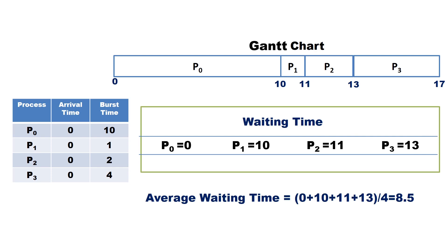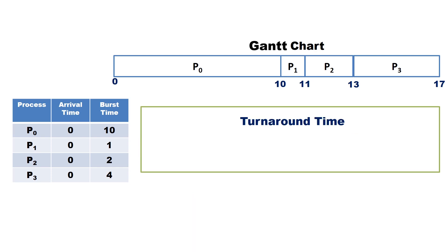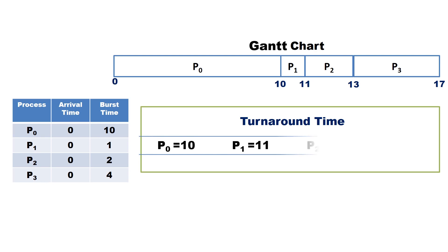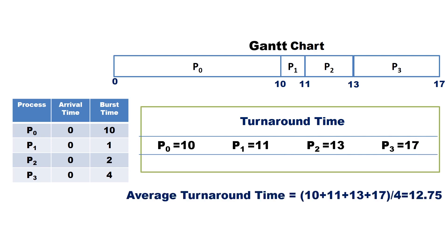Turnaround time is the time from submission to completion of the process — the difference between completion time and arrival time. P0 arrived at 0, completed at 10: turnaround = 10. P1 arrived at 0, completed at 11: turnaround = 11. P2 arrived at 0, completed at 13: turnaround = 13. P3 arrived at 0, completed at 17: turnaround = 17. Average turnaround time = (10 + 11 + 13 + 17) / 4 = 12.75.